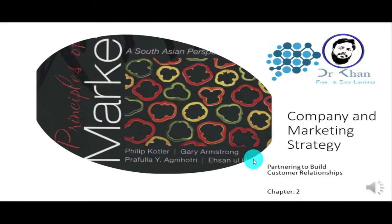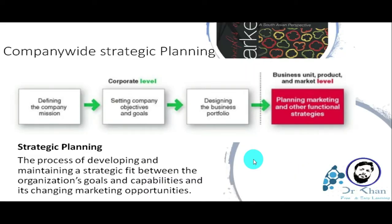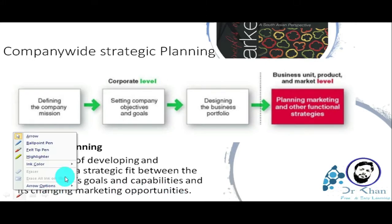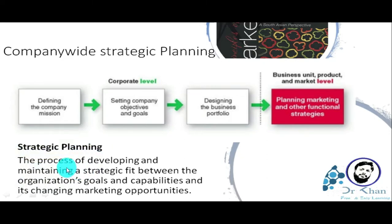Welcome to the class Principles of Marketing. Today we are going to discuss the second chapter: company-wide strategic planning. Strategic planning is the process of developing and maintaining a strategic fit between the organization's goals and capabilities and its changing marketing opportunities.